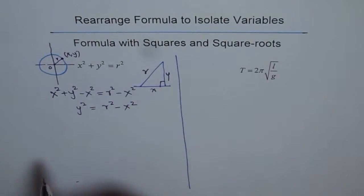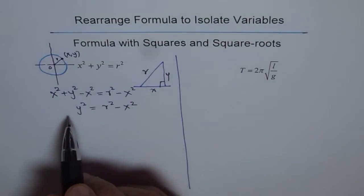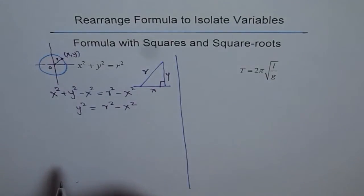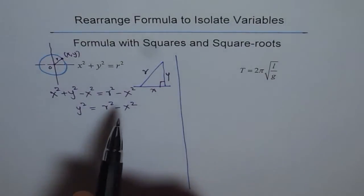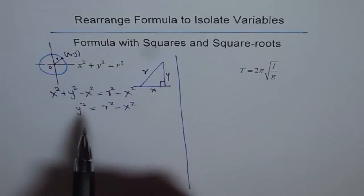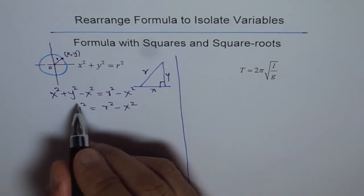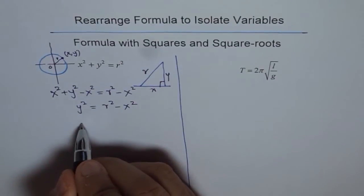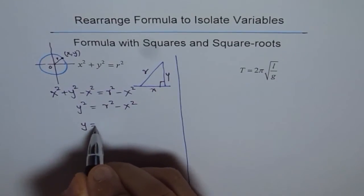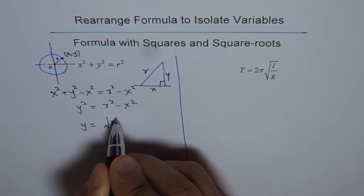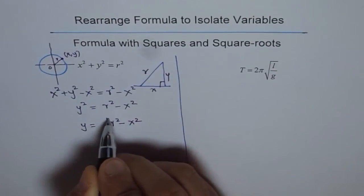Let us assume we are only working with positive values. When we square root, we get only positive values. Square root both sides, and we get y = √(r² - x²). This is y because square root of y² is y itself.